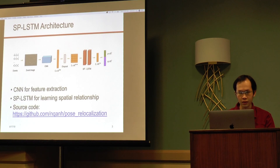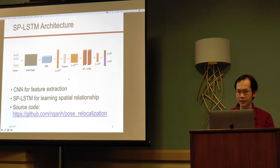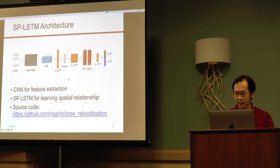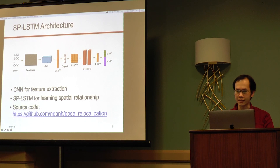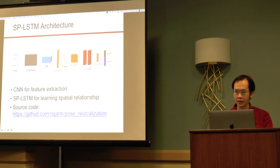This is an overview of our 6DOF pose relocalization method for event cameras. We first create an event image from a list of events, then use a CNN to learn features from this image.